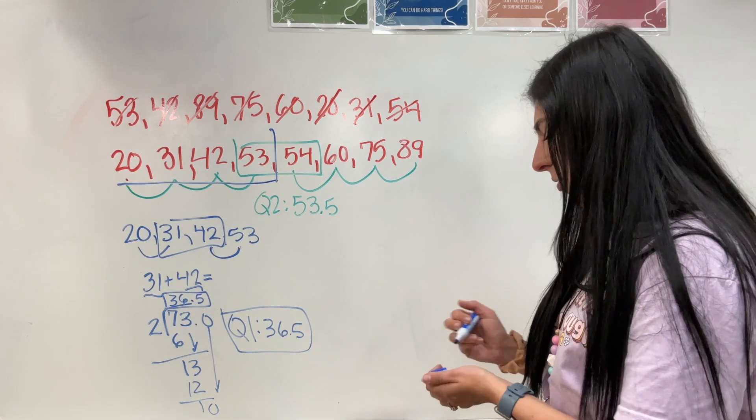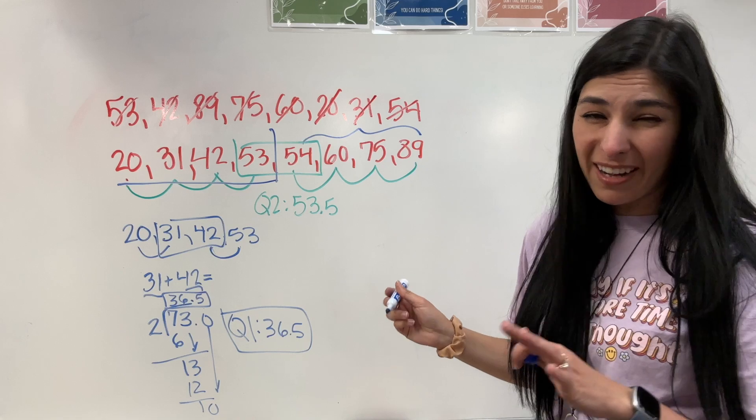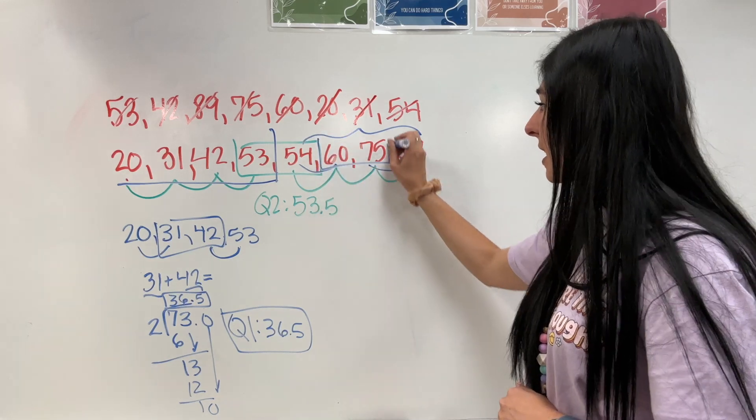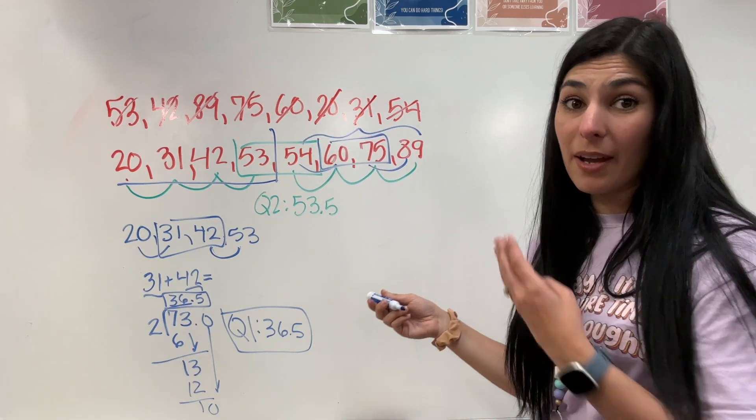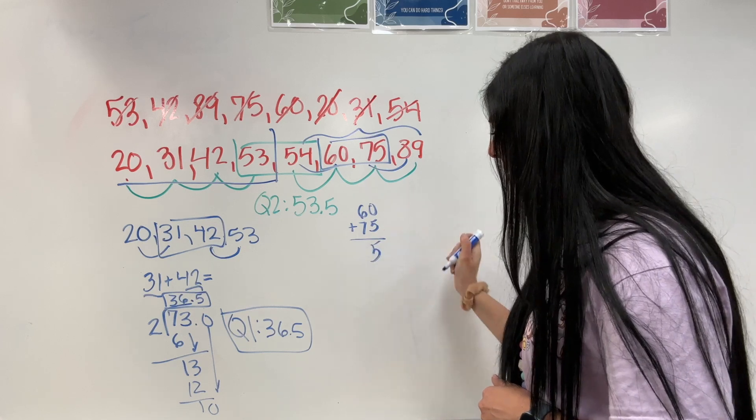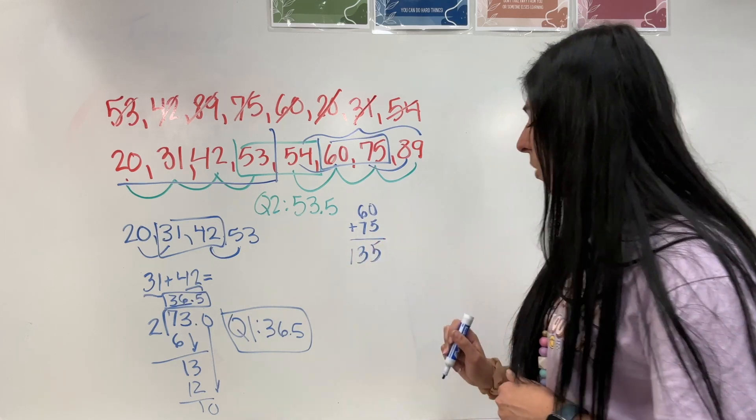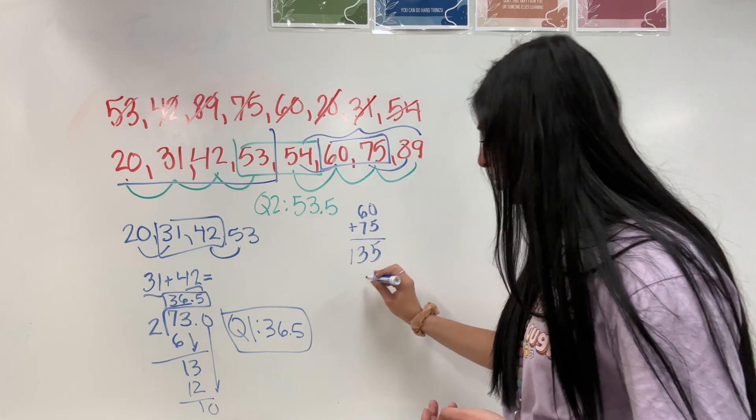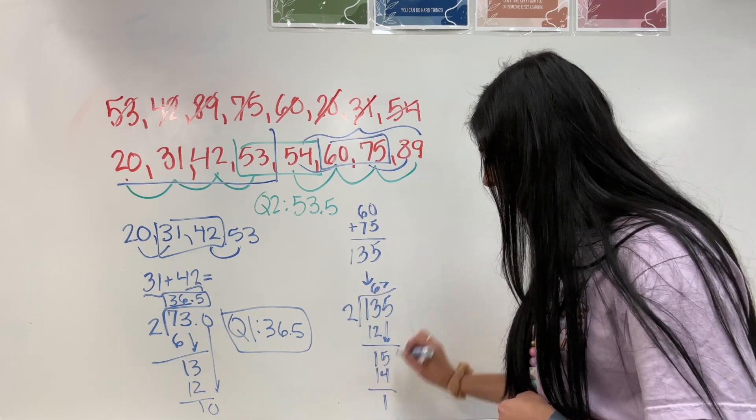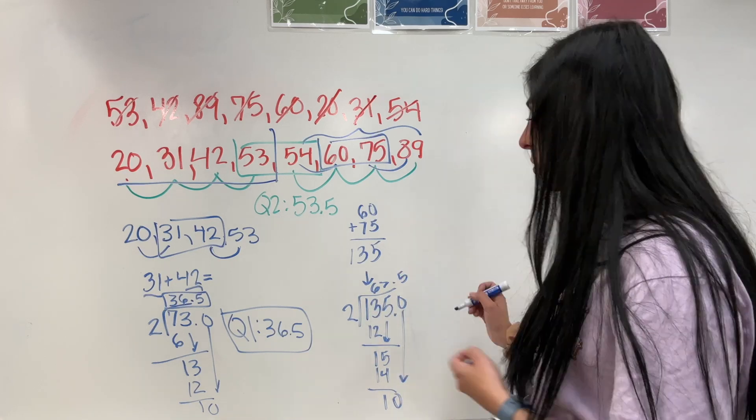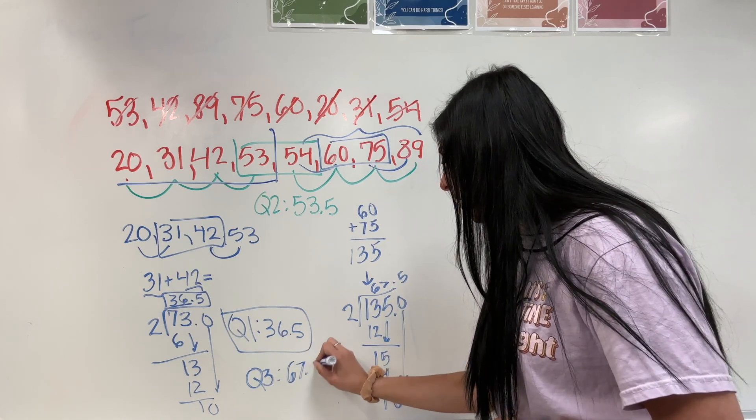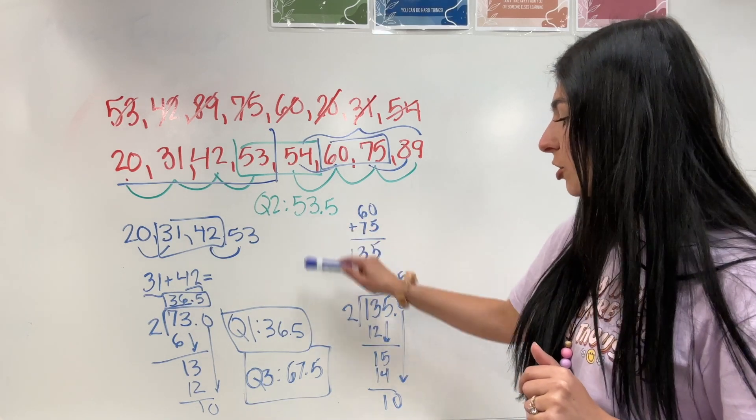Now for Q3. For Q3, I am looking at these numbers. Instead of rewriting, I'm just going to work with what I got. If I jump in the middle, I see that 60 and 75 are my two medians. So I need to find the mean of those. 60 plus 75 is 135. But I have two numbers, so I'm going to divide that by 2... 5 times. So my Q3 is going to be 67.5. So from here, I have my Q1, Q2, and Q3.